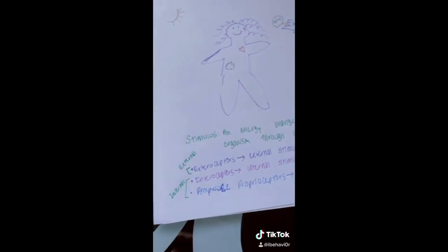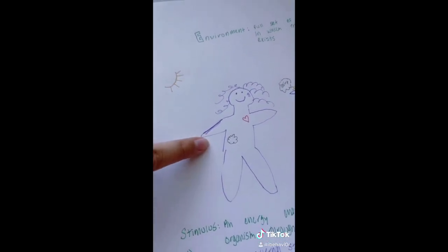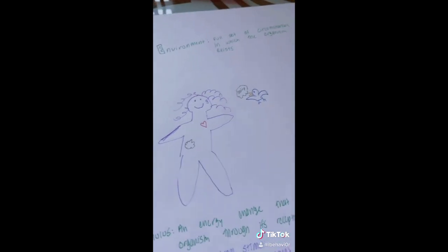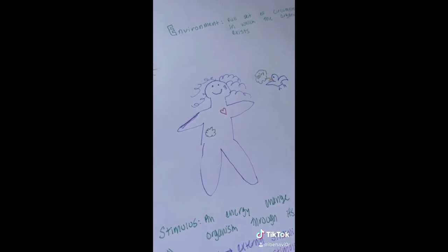We have some receptor systems here: exteroceptors, interoceptors, and proprioceptors. I have such a hard time spelling that one! The exteroceptors deal with external stimuli, like hearing a bird chirping, feeling the sun on your skin, things that relay information happening in the outside environment. We can think of taste, smell, hearing, etc.